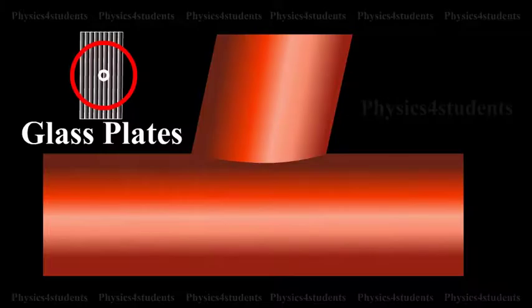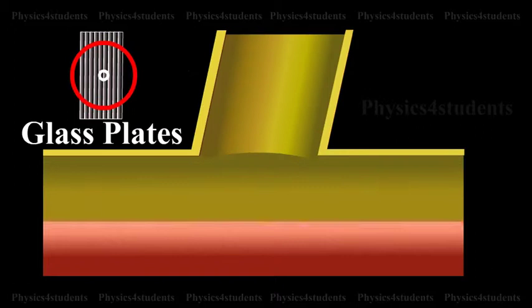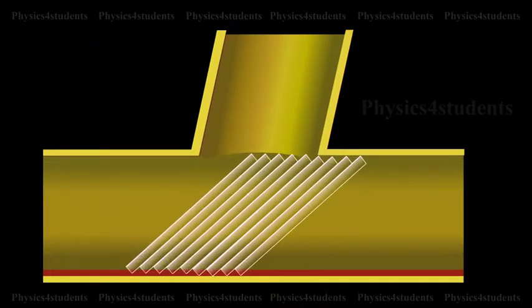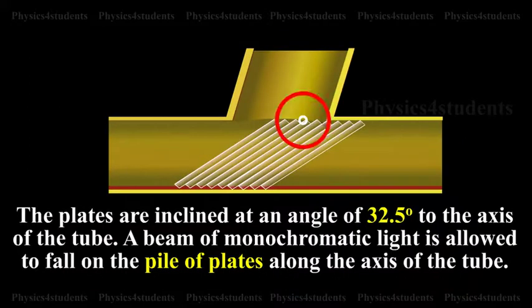It consists of a number of glass plates placed one over the other as shown in the animation in a tube of suitable size. The plates are inclined at an angle of 32.5 degrees to the axis of the tube.